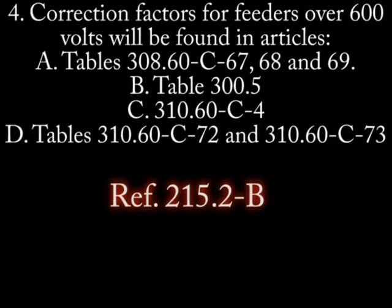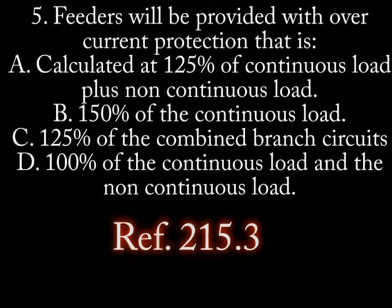Number 4: Correction factors for feeders over 600 volts will be found in: A. Tables 310-60-C-67, 68, and 69. B. Tables 300.5. C. Table 310.60-C-4. D. Tables 310.60-C-72 and 310.60-C-73.